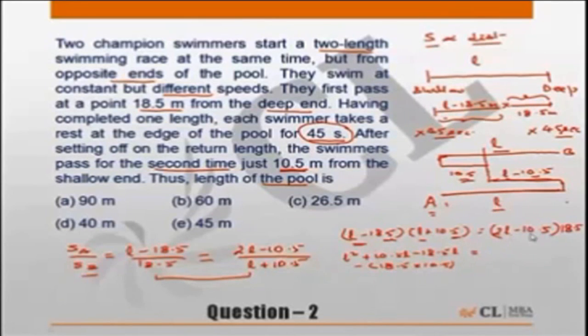On the right hand side we will get 18.5 into 10.5. So on both sides I can cancel out 18.5 into 10.5, and we are left with L square plus 10.5 minus 18.5, makes it minus 8L. This is equal to 37L, which implies L square is equal to 45L. Just transpose this 8L to the other side, or this implies L is equal to 45. So the correct answer is choice E.